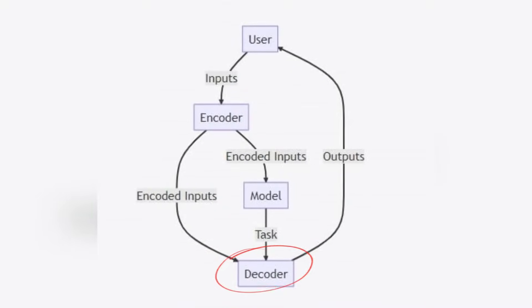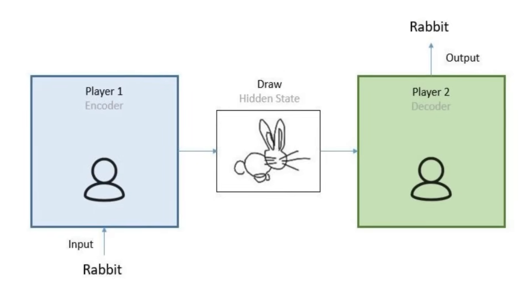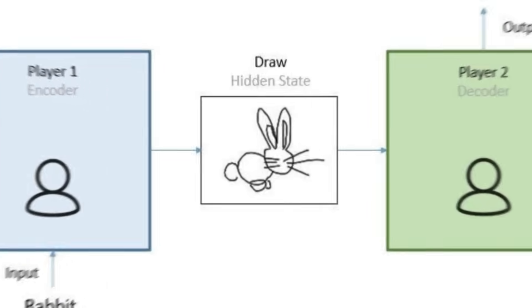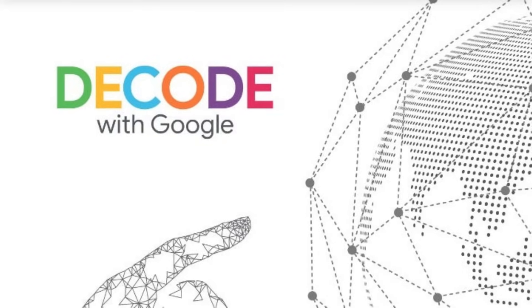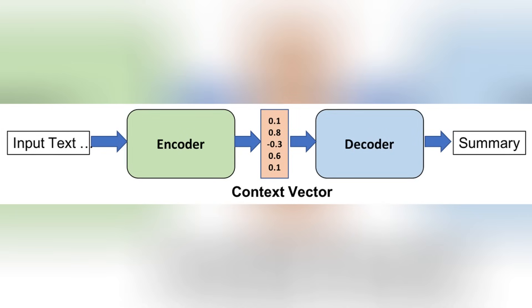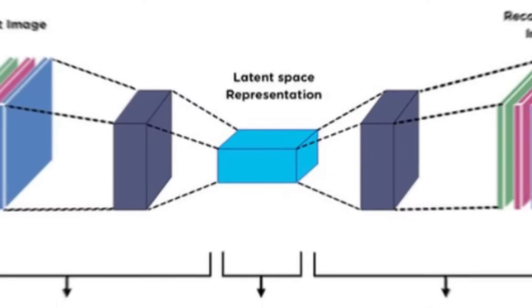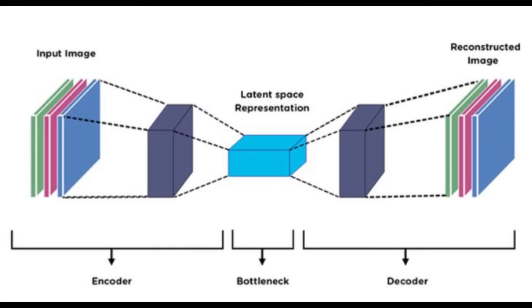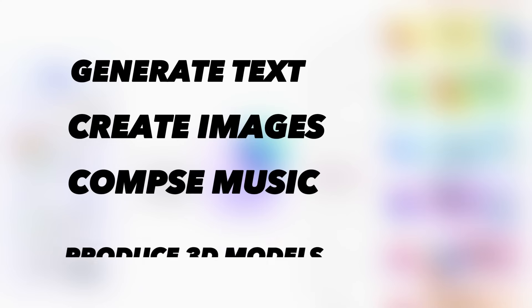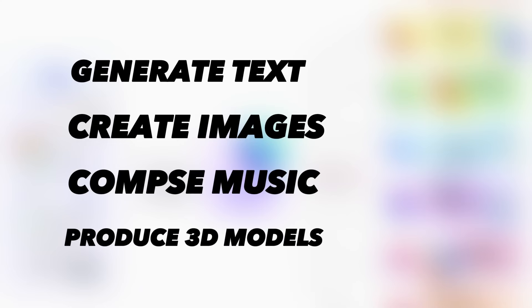Once the encoder has done its magic, the baton is passed to the decoder. This is where the real action happens. The decoder takes this universal language, these high dimensional vectors, and starts the process of generating outputs. But unlike traditional decoders that are limited to a single type of output, Gemini's decoder is a polymath. It can generate text, create images, compose music, and even produce 3D models, all based on the task at hand.